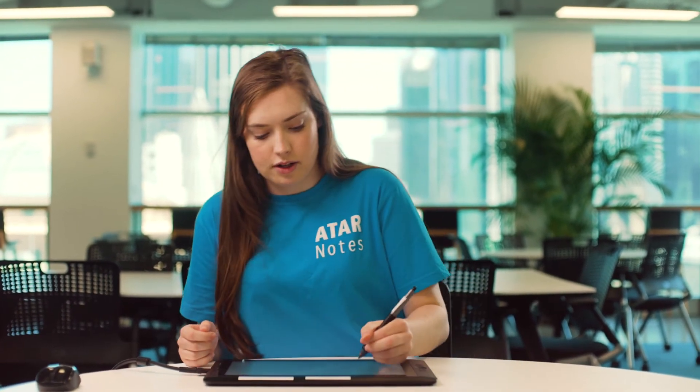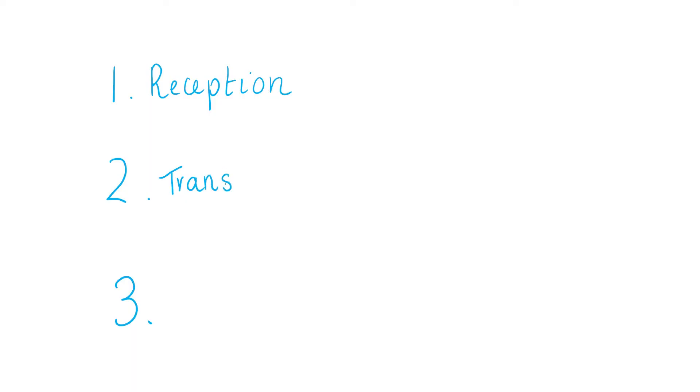The second step is transduction. Transduction is the process of turning the extracellular signal into an intracellular signal that can be acted upon by the cell. This usually involves a change in the receptor due to the binding, then activating other molecules within the cell, such as secondary messengers, that will then activate other molecules — sort of like a cellular relay.